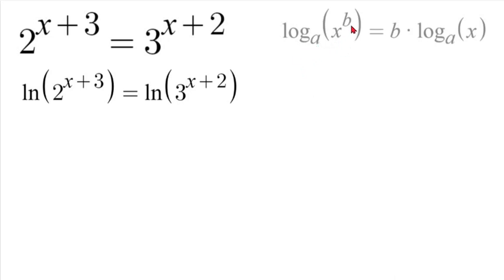So if we had log of x to the power of b that would be equal to b log x. So we can take that exponent b and move it to the front. So in this case we would have (x plus 3) natural log of 2 is equal to (x plus 2) natural log of 3.